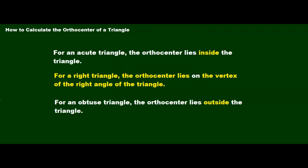Where the orthocenter lies really depends on the angle of the triangle. For an acute triangle, the orthocenter lies inside the triangle. For a right triangle, the orthocenter lies on the triangle, specifically on the vertex of the right angle. And for an obtuse triangle, the orthocenter lies outside the triangle.